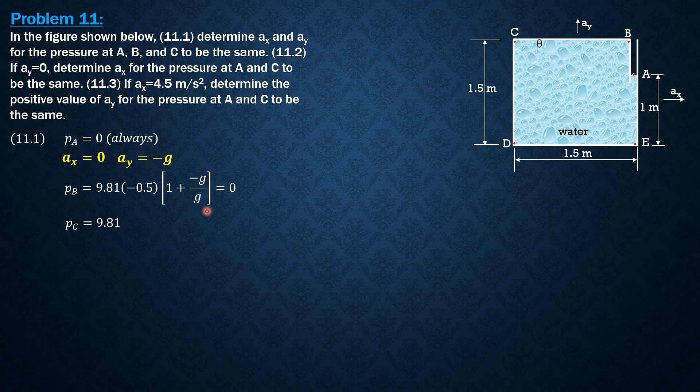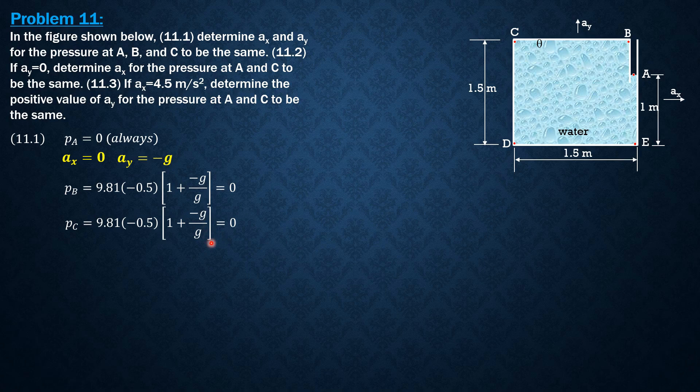Same is true for C. 9.81 times negative 0.5 times 1 plus negative G over G. So that's why it's 0. So the answer: AX is 0 and AY is negative G.